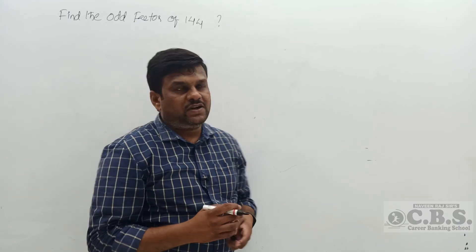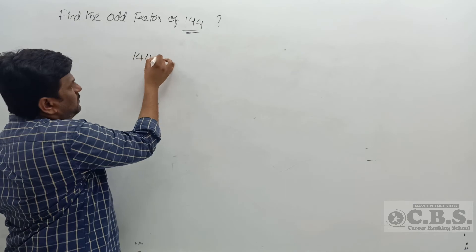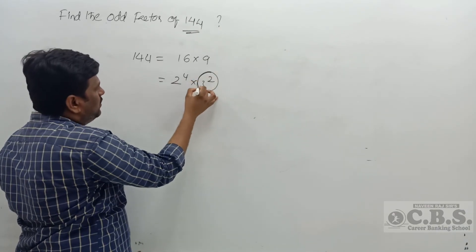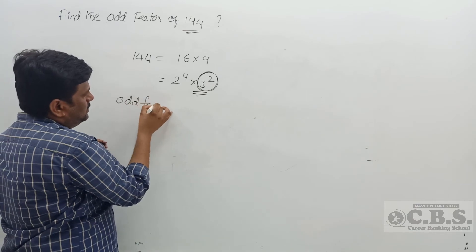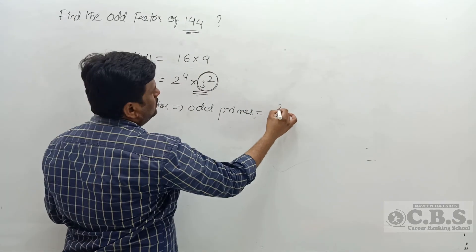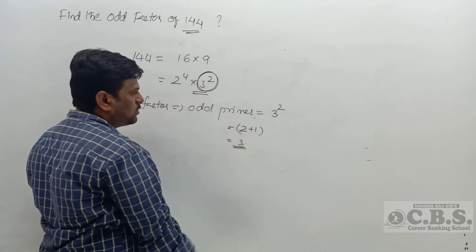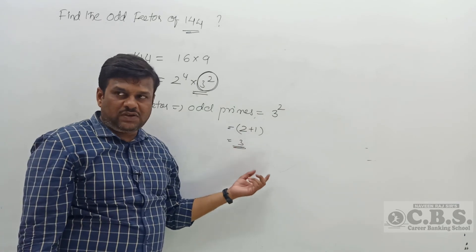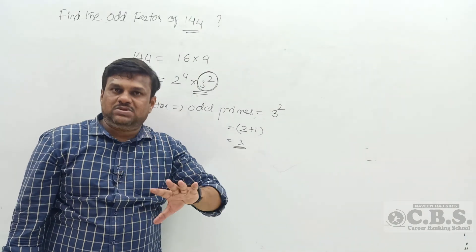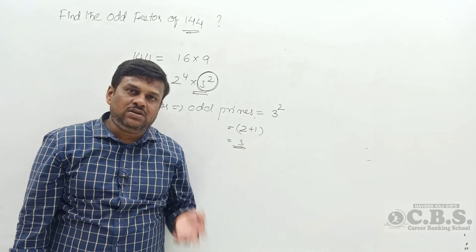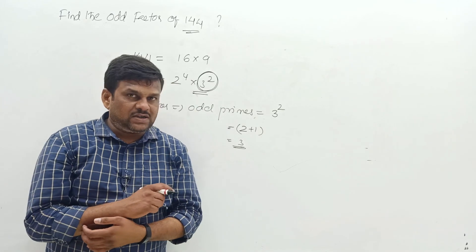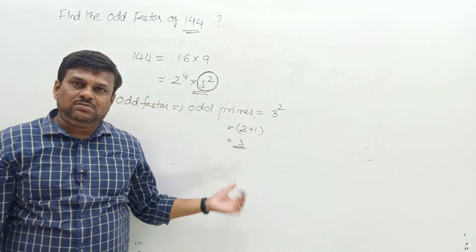Find the total odd factors of 144. 144 = 2⁴ × 3². For odd factors, take only odd primes: 3². Odd factors = 2+1 = 3. So 144 has only 3 odd factors; the rest are even factors. Summary: only even composite numbers contain three types of factors — prime, odd, and even. Odd composite numbers contain only two types: prime factors and odd factors; even factors are zero.